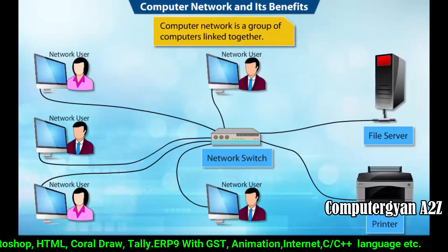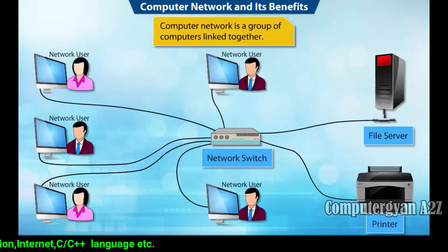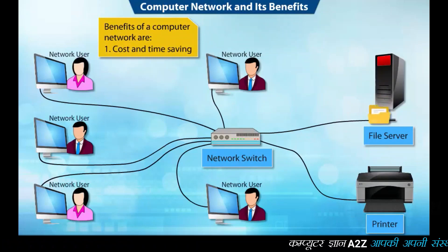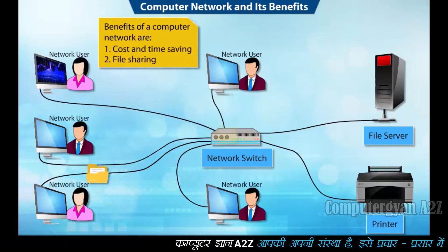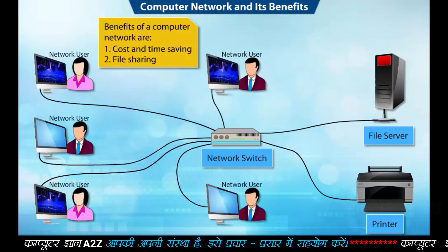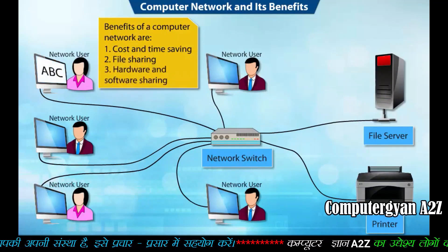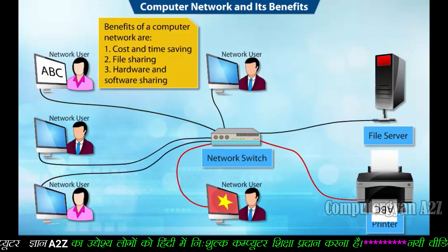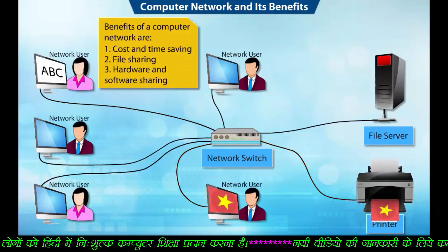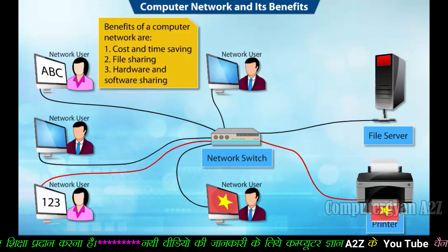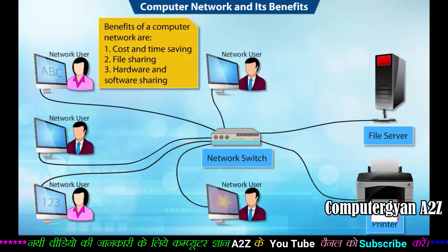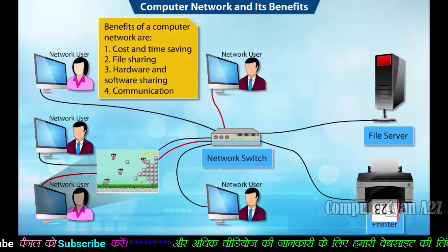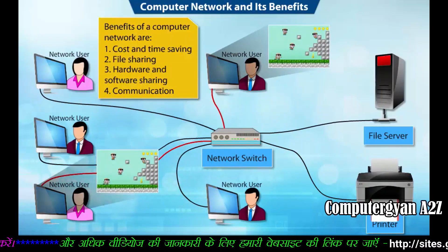A computer network is a group of computers linked together to share resources and communication. Benefits of a computer network include: networks help save cost and time; users can easily share data files; networks facilitate sharing of devices such as printers, scanners and hard drives. Computer networks also help in sharing software applications and help users to communicate easily. Network users can also play online games together from different geographical locations.